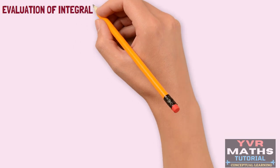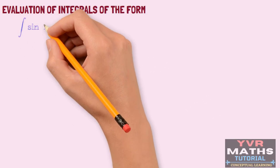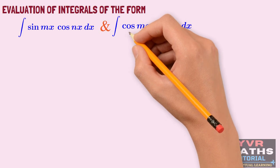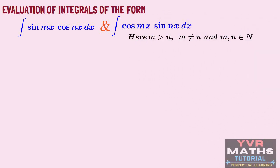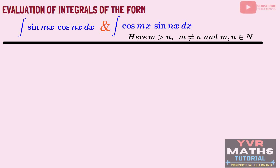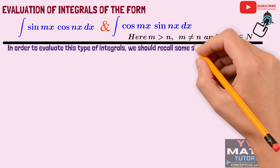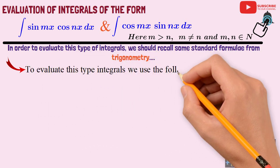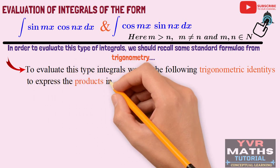Let us start the discussion about how to evaluate integrals in the form of ∫sin(mx)cos(nx)dx and ∫cos(mx)sin(nx)dx, where m is greater than n, and m and n are different positive integers. To evaluate integrals of this type we should recall some standard formulae from trigonometry which we learnt in classes 10 and 11. We will use the following trigonometric identities to express products into sums.